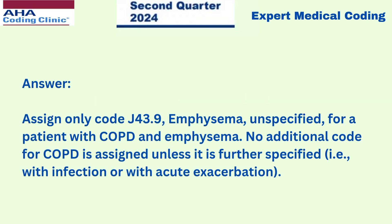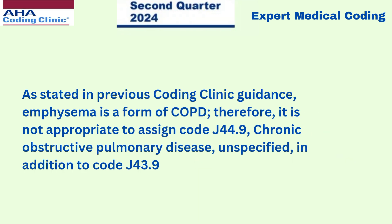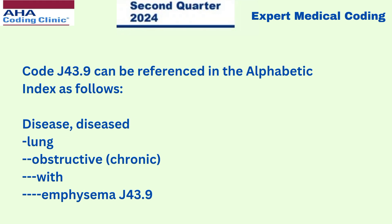The answer is to assign only code J43.9 — emphysema unspecified — for a patient with COPD and emphysema. No additional code for COPD is assigned unless it is further specified, that is with infection or with acute exacerbation. As stated in previous Coding Clinic guidance, emphysema is a form of COPD. Therefore, it is not appropriate to assign code J44.9 in addition to code J43.9. Code J43.9 can be referenced in the alphabetical index using the main term disease, subterm lung, obstructive chronic with emphysema, which leads to code J43.9.